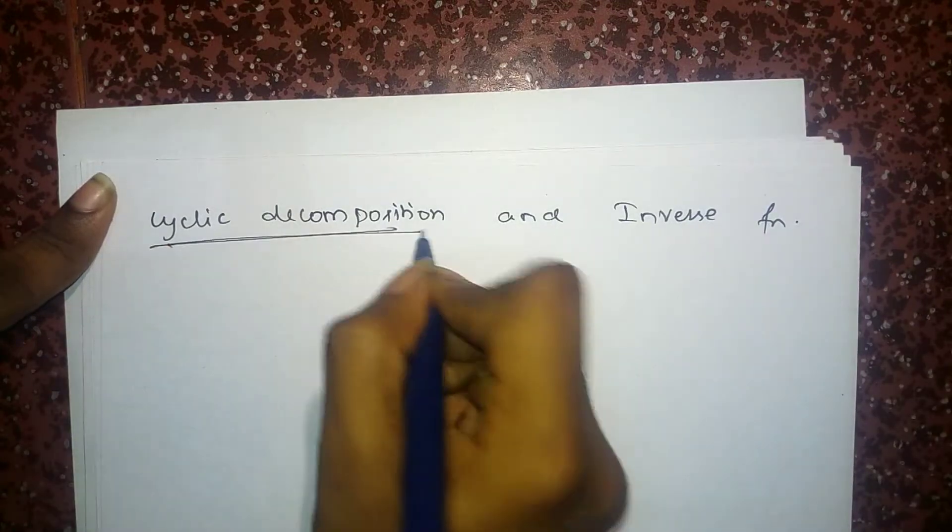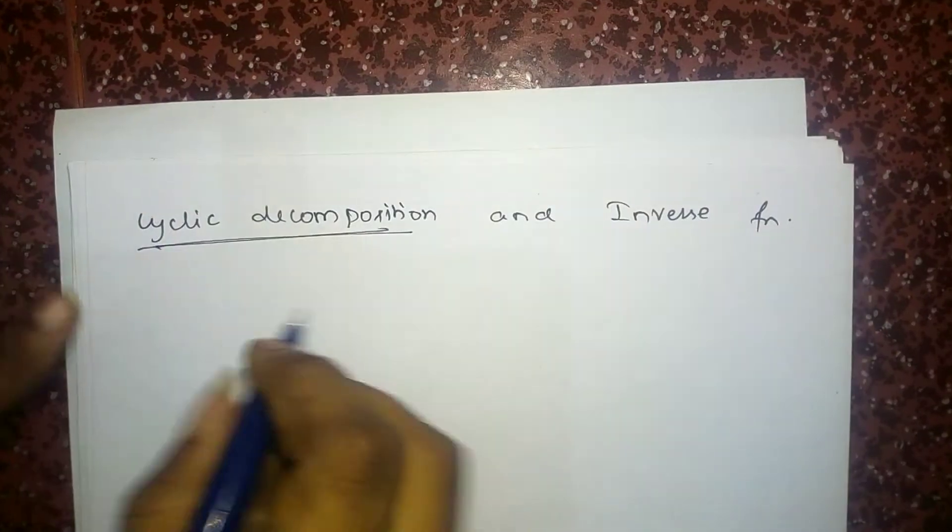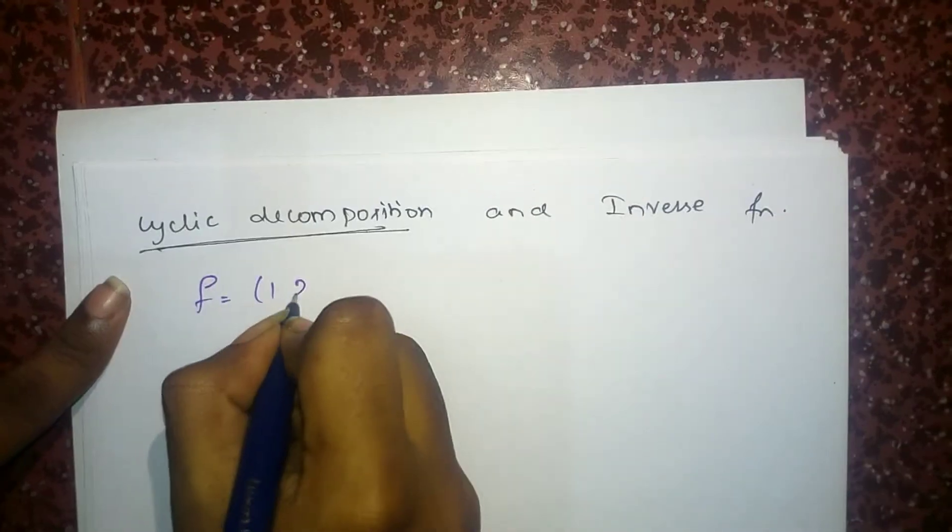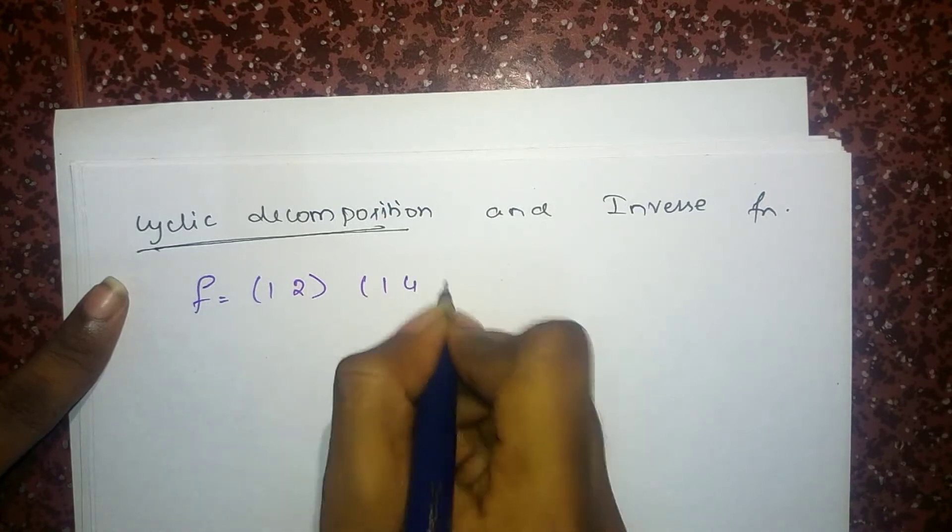First of all, we will go for the cyclic decomposition. I will take a permutation F as 1, 2 and 1, 4, 5, 6.